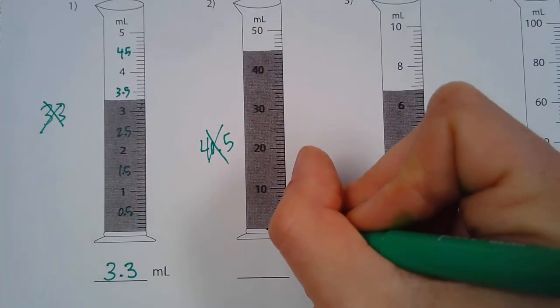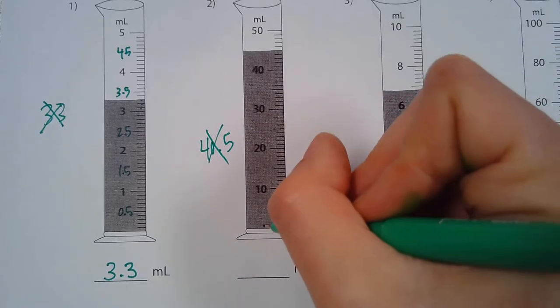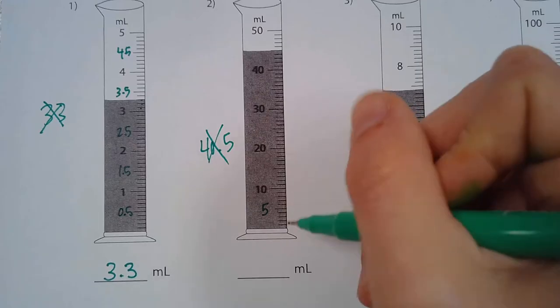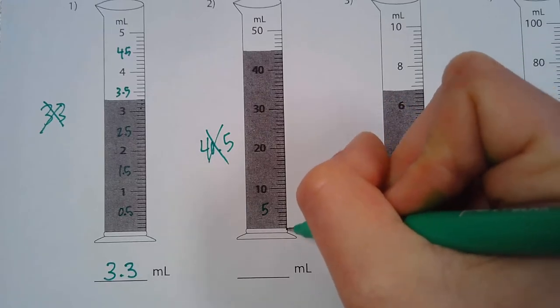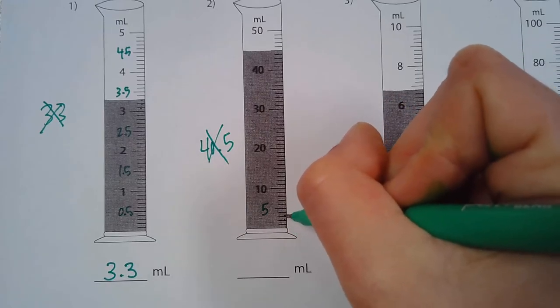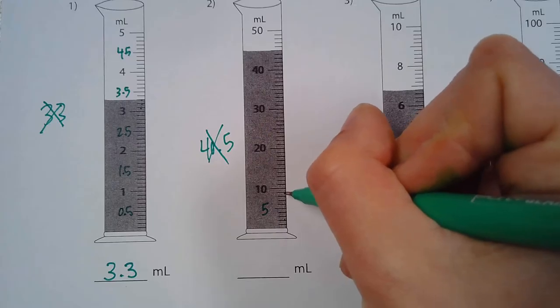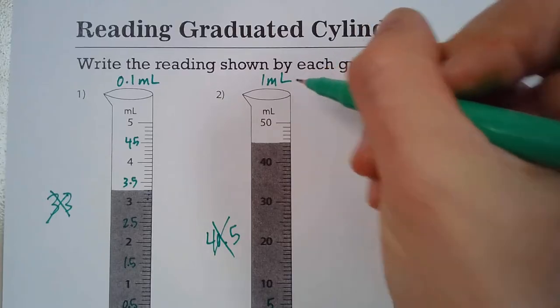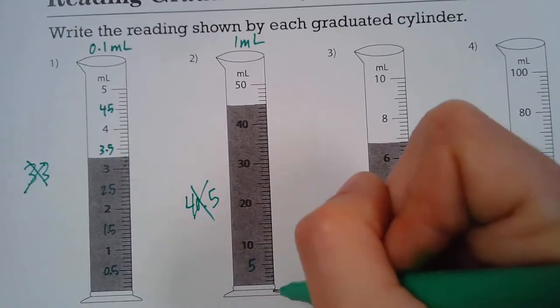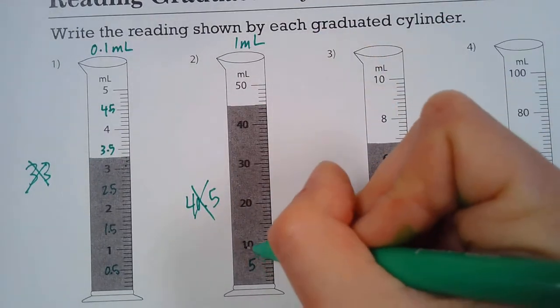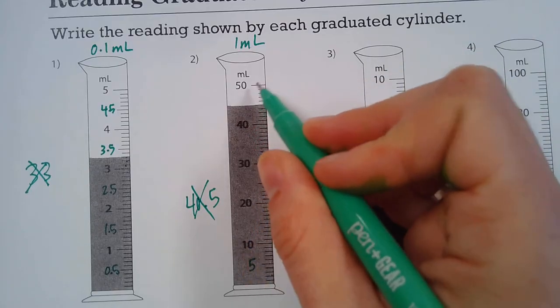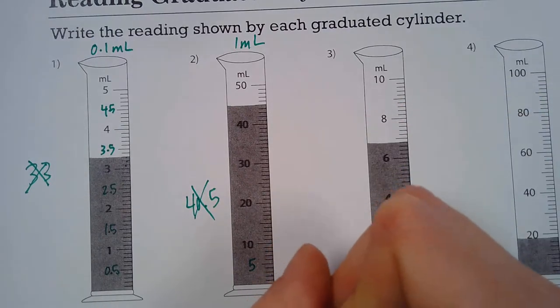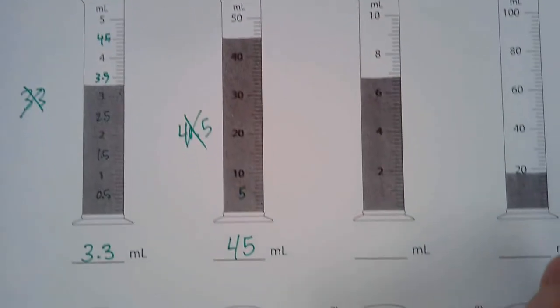Again how you can look at this is if the bottom is 0 and this top is 10, halfway between 0 and 10 would be 5. And so from 0 to 5 if we count by ones, 1, 2, 3, 4, 5, 6, 7, 8, 9, 10, that makes sense. So we've identified that our scale is one milliliter, so the smallest line is one. And so we go all the way up here so we're at 10, 20, 30, so it's above 40, we're not at 50 yet, so it's 40, 41, 42, 43, 44, 45 milliliters is our answer for number two.